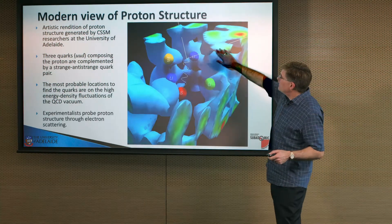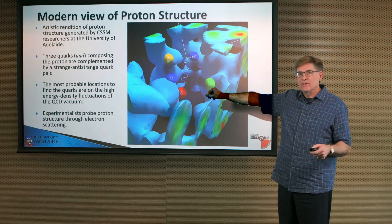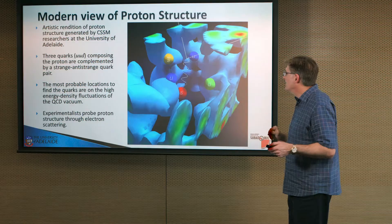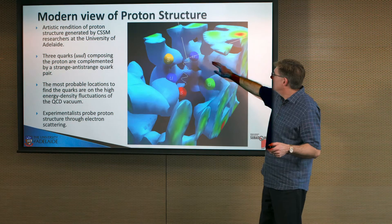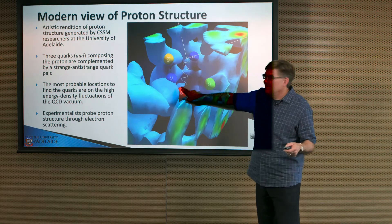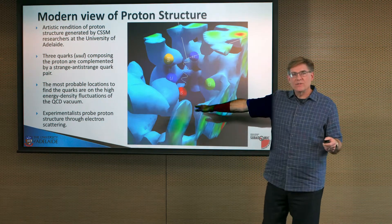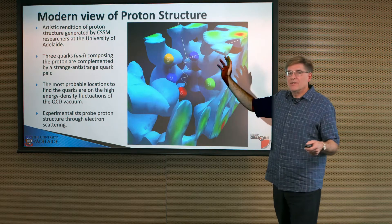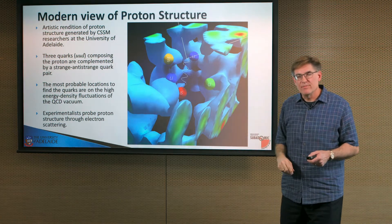This is how experimentalists investigate the structure of the proton. The straight line here is an electron — it doesn't couple directly to the gluon field, so it just plows straight through. Same with the photon: the photon comes in, hits a strange quark, so experimentalists can learn about how the strange quarks contribute to proton structure. They measure the outgoing electron and learn about structure through that measurement.